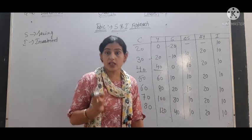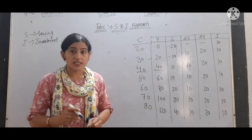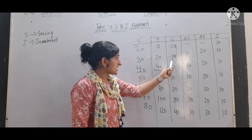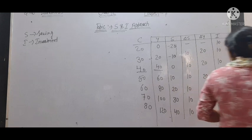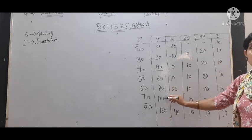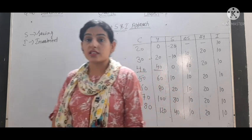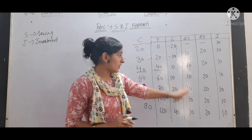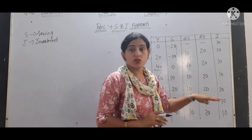Now, what is the change in saving? You can see the change in saving is 10, 10, 10 — constant. The change in income is 20, 20, 20 — also constant. So income is changing at a constant rate and saving is also changing at a constant rate. The difference in saving is 10, 10, 10 and in income it is 20, 20, 20.